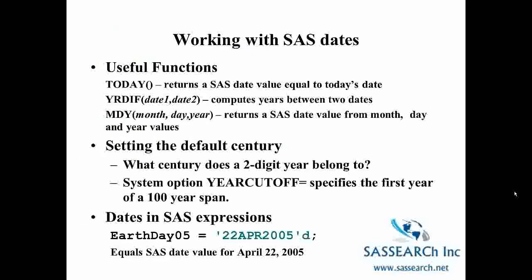SAS has a number of functions that make it easier to work with dates. The today() function — written as today with open and close parentheses — returns a SAS date value equal to today's date. Every time you run the program on a different day, it returns the SAS date value equal to that day's date. Another helpful function is the yeardiff() function. If you give it one date variable, a comma, and another date variable, it computes the years between those two dates.